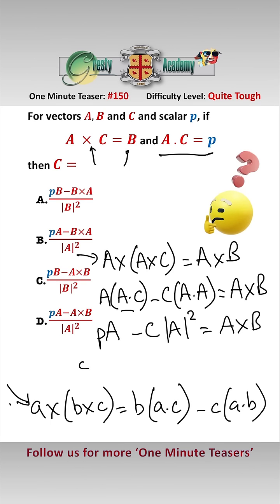Now all we need to do is get C on the other side, so C times mod A squared equals PA minus A cross B. And as mod A squared is a scalar, we can divide by mod A squared, and that gives us C equals PA minus A cross B over mod A squared, answer D.